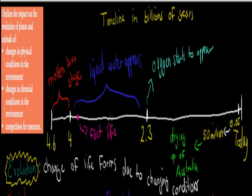Welcome to the first video of the Evidence for Evolution chapter. In this video we're going to cover this syllabus dot point, which says: outline the impact on the evolution of plants and animals of changes in physical conditions in the environment, changes in chemical conditions in the environment, and competition for resources.